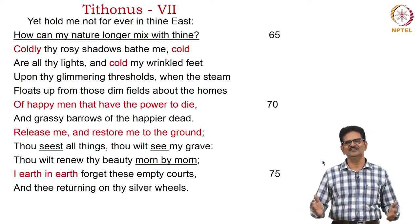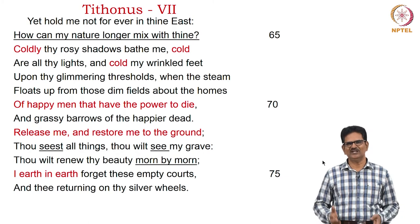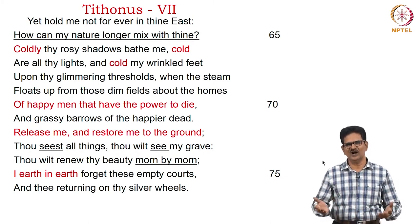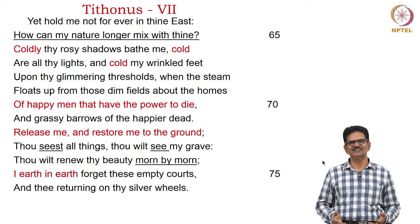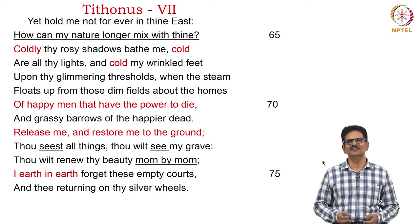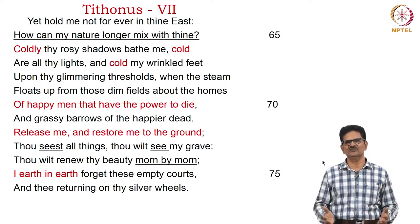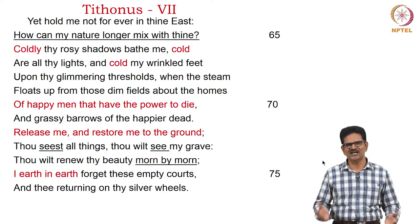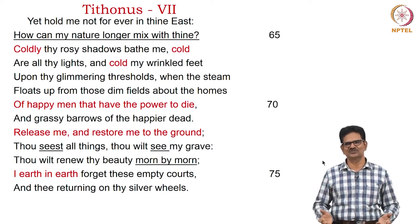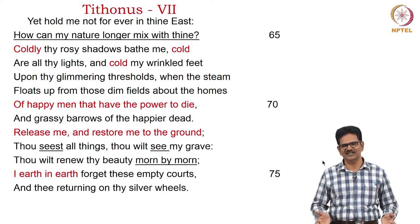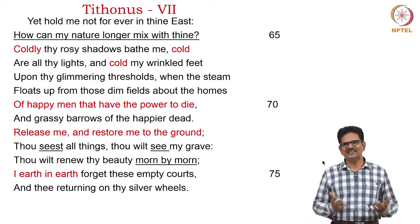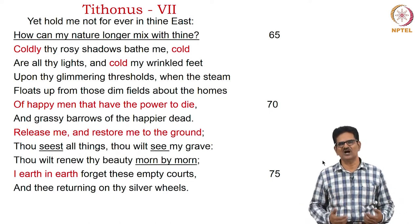Here is a man, Tithonus, who became the object of love for a goddess, became immortal, but did not have immortal youth. And so we have the anguish of this man — he wants to die. Earlier he wanted to be immortal; now he wants to die, but he cannot. So he cries for release from this old age, this old body.